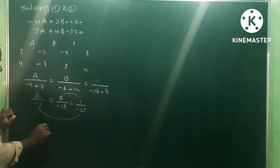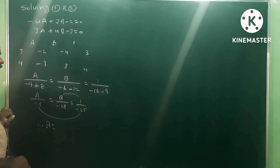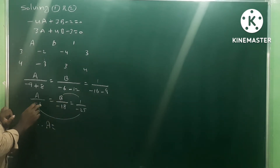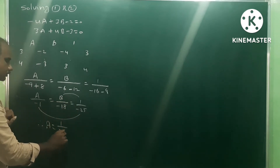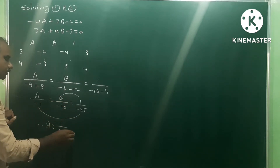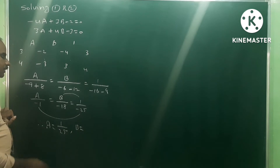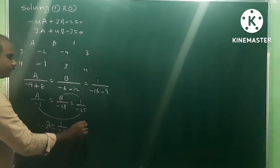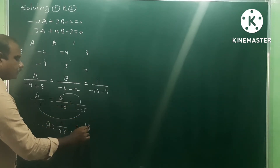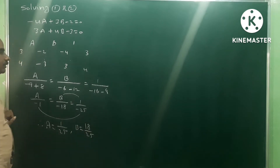From the cross-multiplication: a / (−1) = 1 / (−25), so the negatives cancel and a = 1/25. Similarly, b / (−18) = 1 / (−25), so the negatives cancel and b = 18/25.